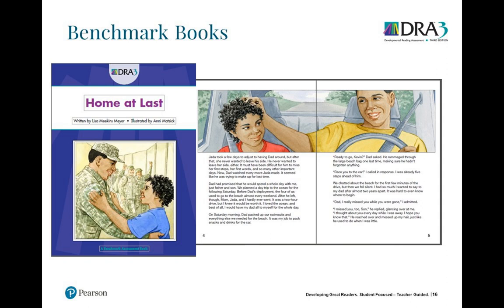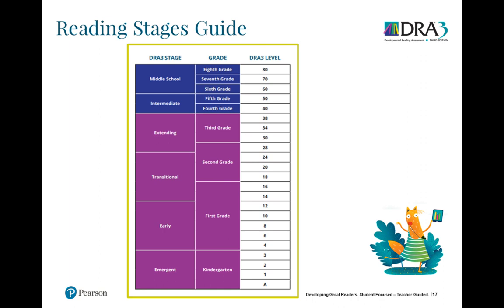Here is an example of the Reading Stages Guide. It starts at level A and goes all the way to level 80, showing which DRA levels are recommended for each grade. For instance, in second grade, students should come in at a level 18 and leave at a level 28.